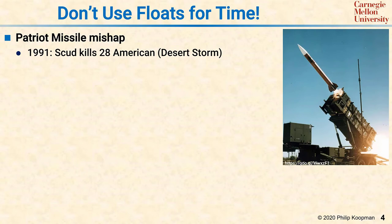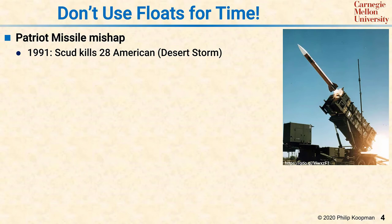One of the biggest mistakes in using floating-point is using a 32-bit floating-point value to represent time. Here's the story.